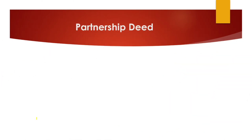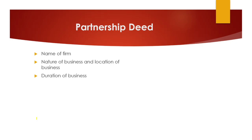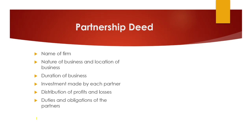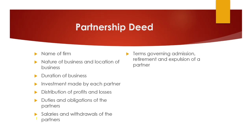Let us see the contents of our partnership deed. First: name of the firm. Next: nature of business and location of business — what kind of business the partnership will undertake and where. Duration of business — whether it will be a partnership at will or a particular partnership. Investment made by each partner — the capital contribution of all partners. Distribution of profits and losses. Duties and obligations of the partners. Salaries and withdrawals of the partners. Terms governing admission, retirement, and exclusion of partners.